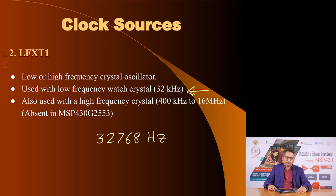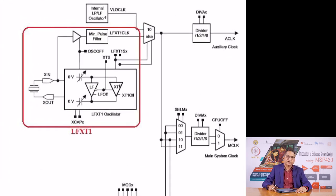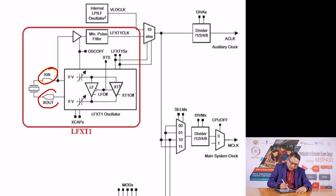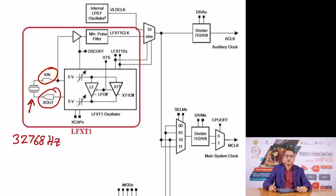If you had a different microcontroller other than this, you could use a higher frequency crystal also. The low frequency crystal oscillator uses the XIN and XOUT pins between which you connect the crystal. In the case of our current microcontroller MSP430 G2553, this crystal can only be 32,768 hertz. It can be other frequencies also, but you would have to get such a crystal custom made. This is the most common commercially available crystal.